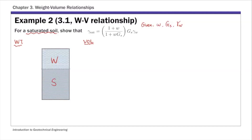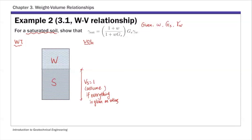Because everything is given in terms of ratios, it's actually safe to assume either the volume of the solid or the total volume equals one. So we can assume the volume of solid Vs = 1. Once you have that assumption, the next step is to figure out all the other weights and volumes on the phase diagram.